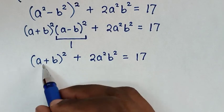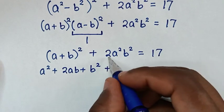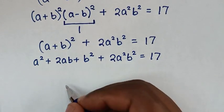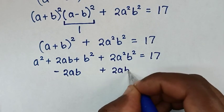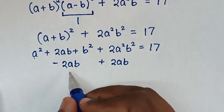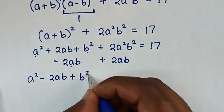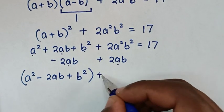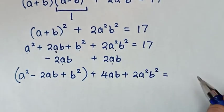In the next step, we expand (a+b)²: that gives a² + 2ab + b², plus 2a²b² = 17. Then we subtract 2ab and add 2ab, so we get (a² - 2ab + b²) + 2ab + 2ab + 2a²b² = 17, which gives (a² - 2ab + b²) + 4ab + 2a²b² = 17.